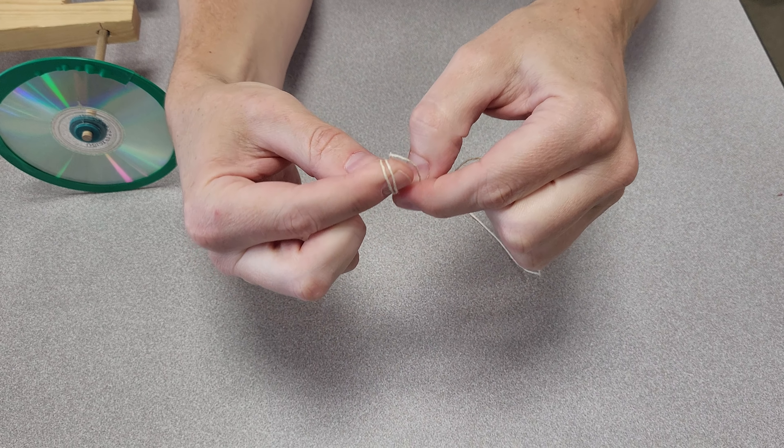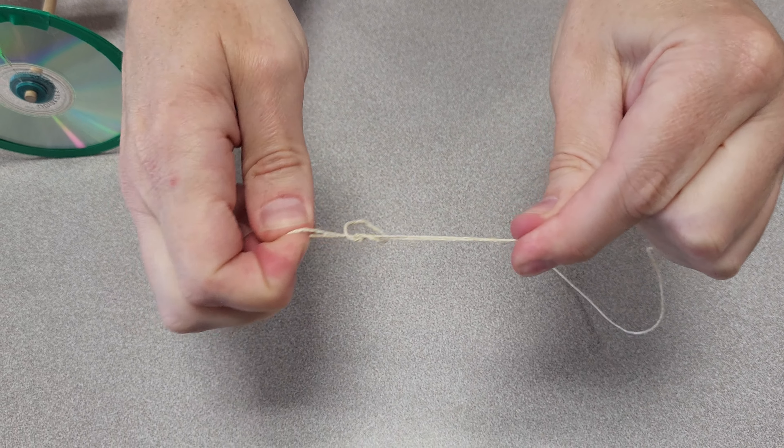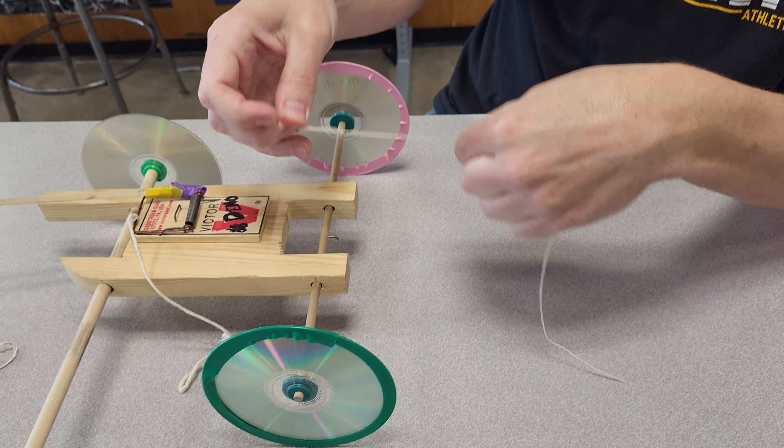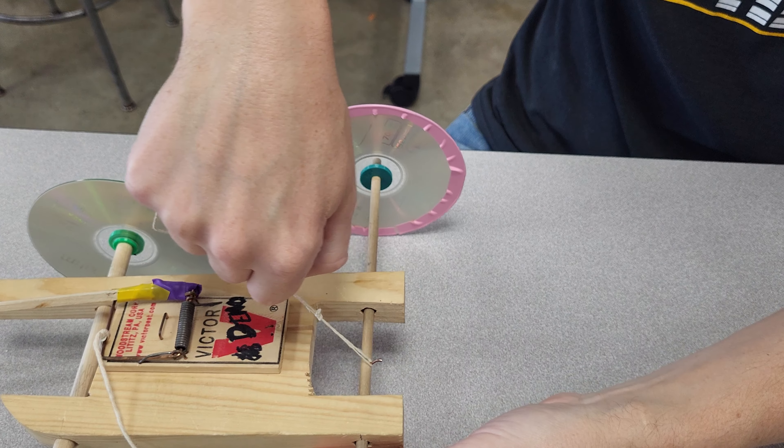and then through that loop you just made, and that gives you a loop to tie it on. So then you can hook that on your string.